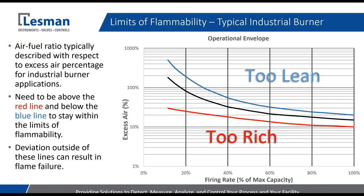Most burners run with 10% excess air and above — they all vary. Some low-NOx, low-emissions burners run a little more excess air to help control NOx production, while others run a little richer to help control CO production. It all depends on the type of burner and the manufacturer's recommendations for air-fuel ratio. Each burner will have a similar kind of operating window between the upper and lower limits of flammability where the burner needs to operate to stay happy. If you deviate outside of these lines, you could cause flame stability issues. As an example, if some system change caused a 10% increase in excess air across the entire range, you could see the curve veer up and at around 65% firing rate enter the 'too lean' area, causing a flame-out.